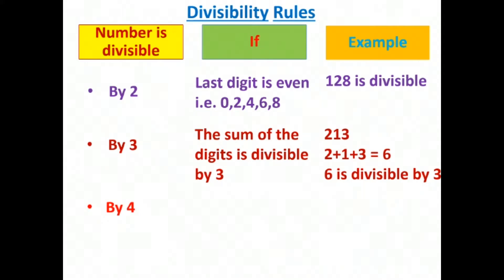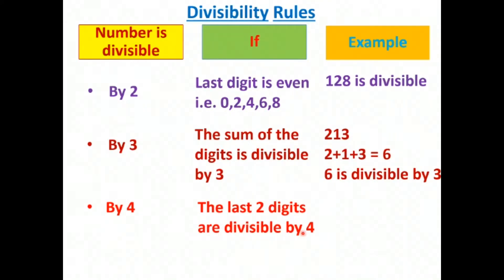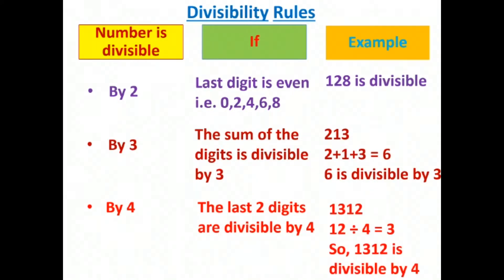The next is the divisibility rule of 4. A number will be divisible by 4 only if the last two digits are divisible by 4. Here I have taken the example 1312. The last two digits are 12. When 12 is divided by 4 we get 3 with no remainder, so 1312 is divisible by 4.